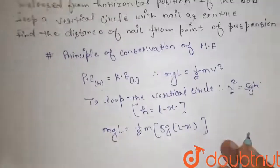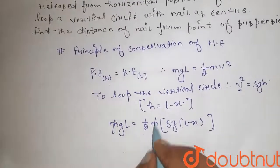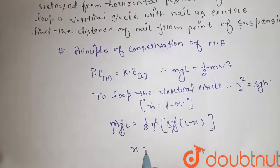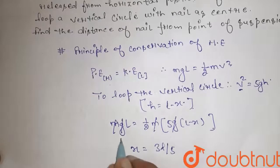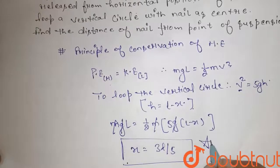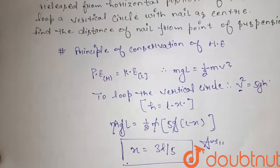From here, we get this cancel with this, g cancel with g. From here, the value of X is 3L by 5. This is the final answer. Thank you.